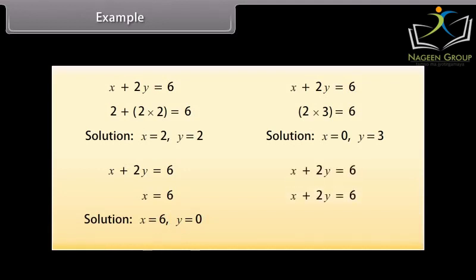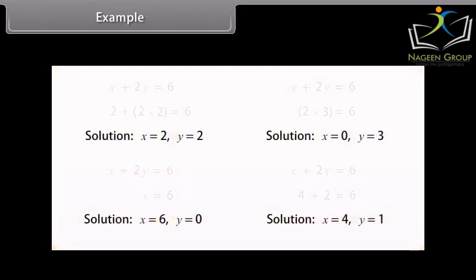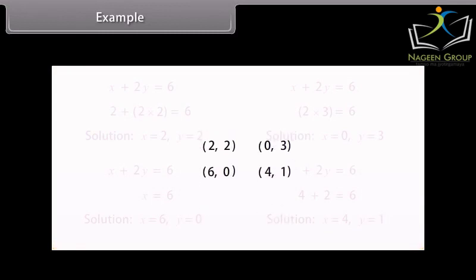For the fourth solution, take Y equals 1. The equation reduces to X plus 2 equals 6, so X equals 4, giving answer 6. Therefore (4, 1) is also a solution. So the four solutions for X plus 2Y equals 6 are: (2, 2), (0, 3), (6, 0), and (4, 1).